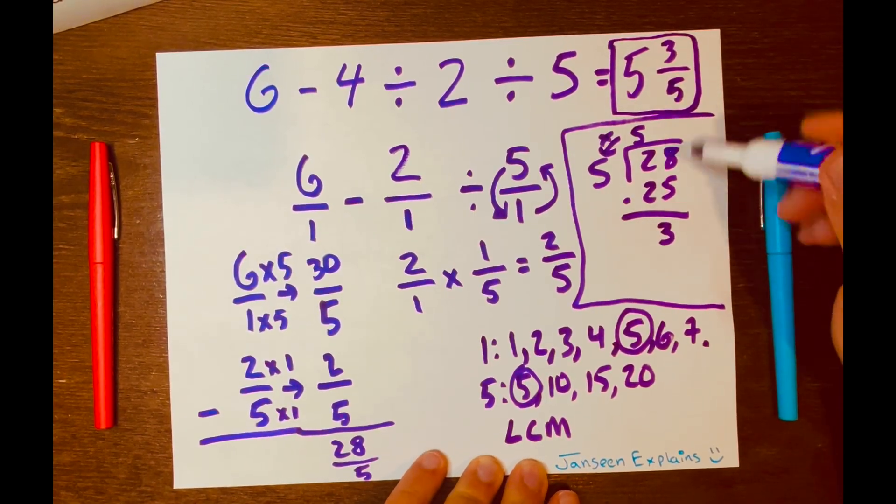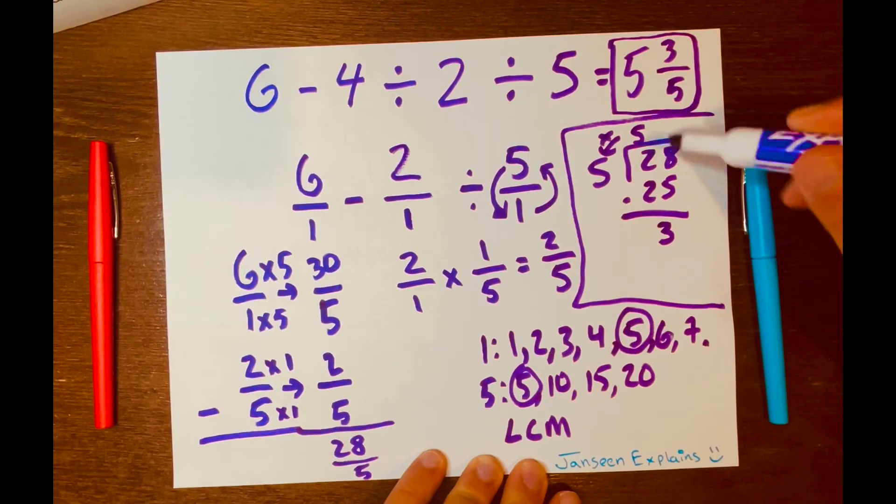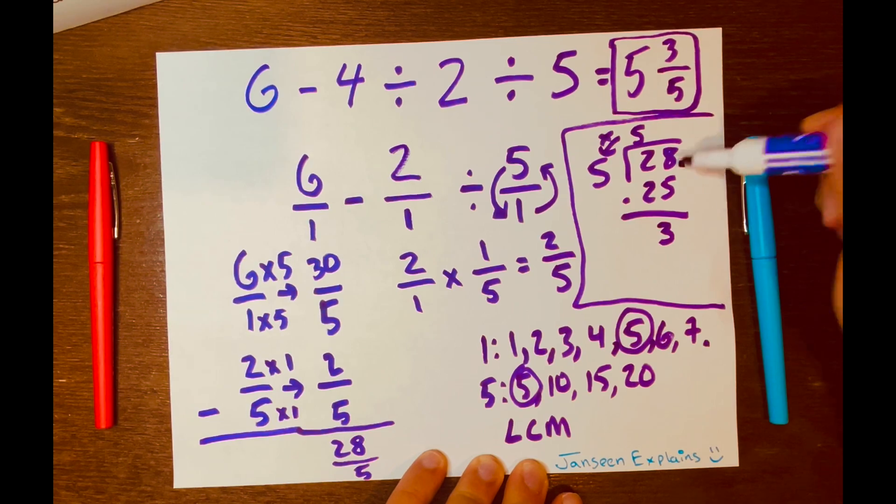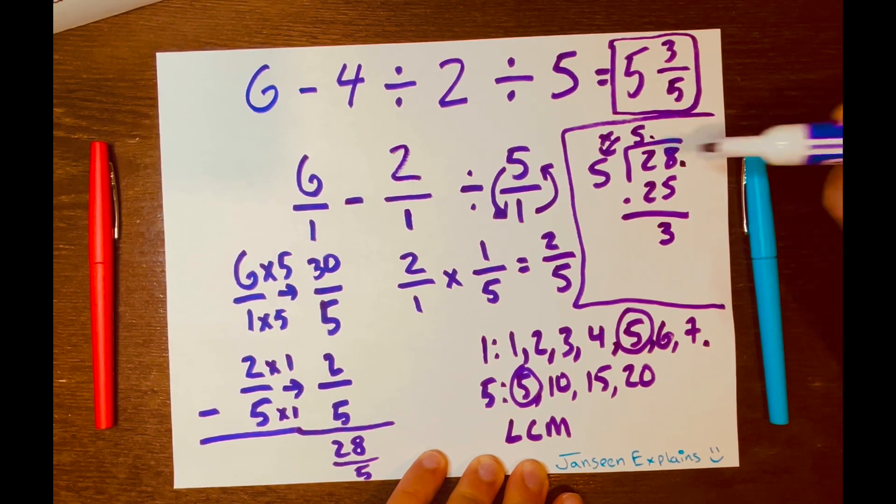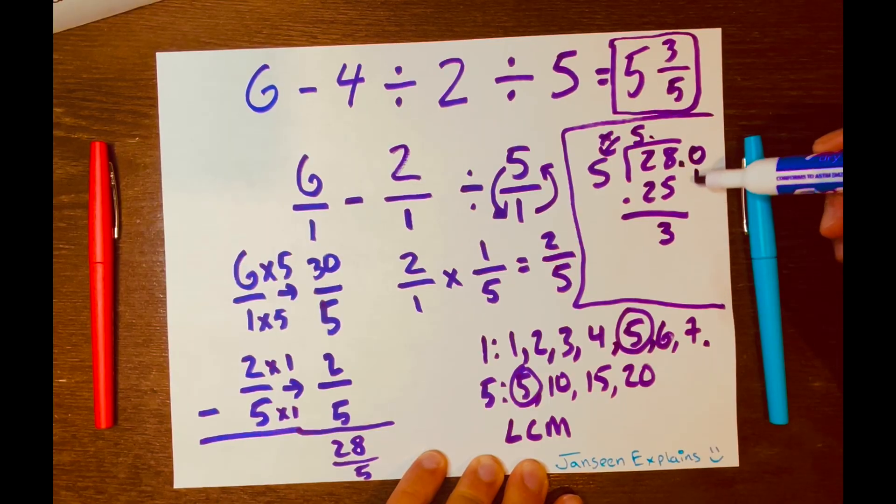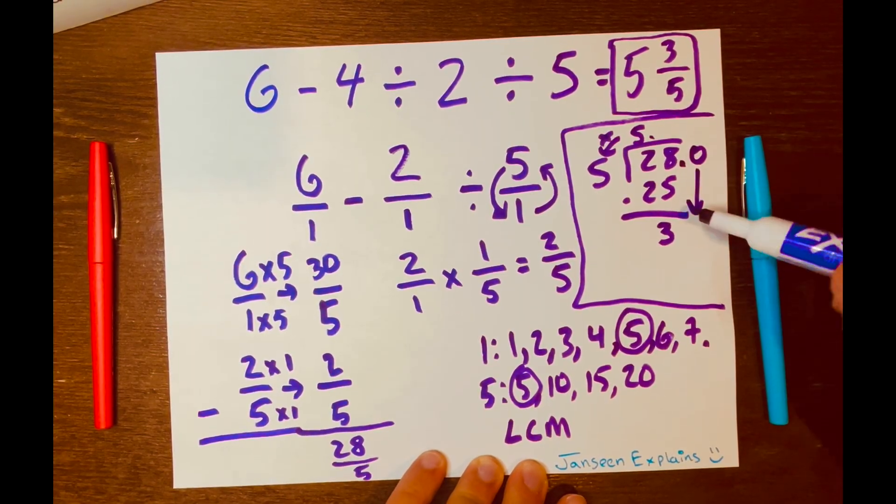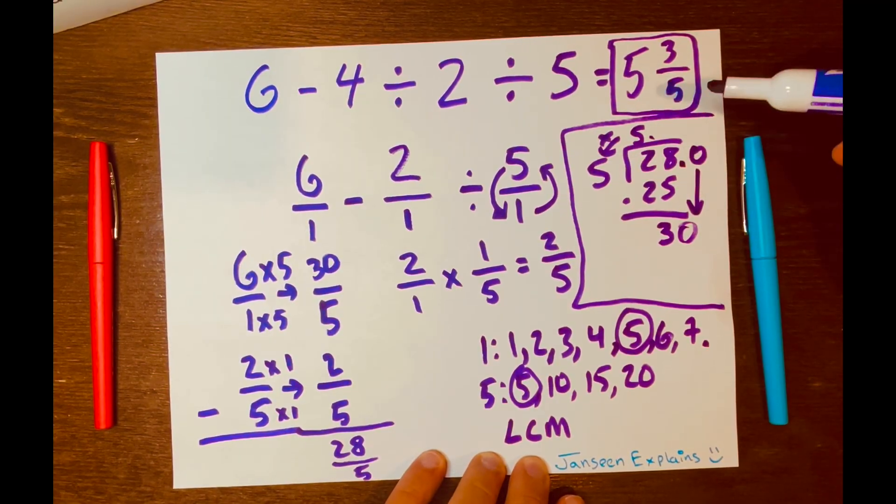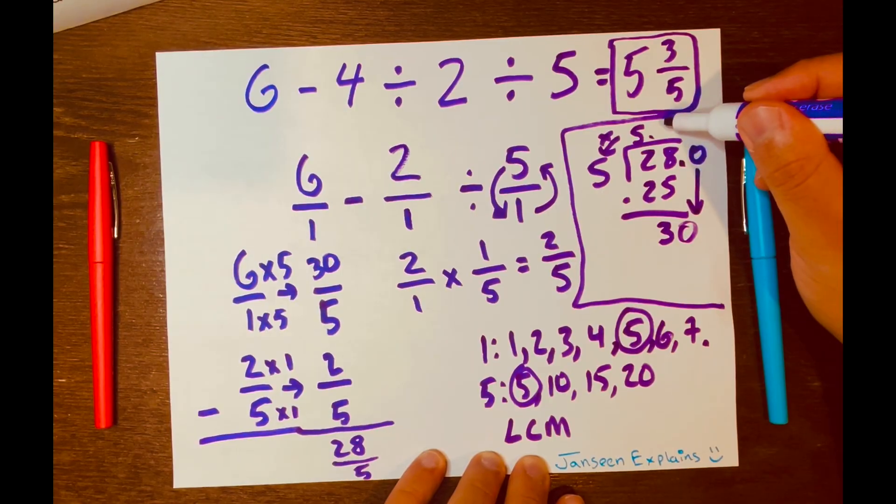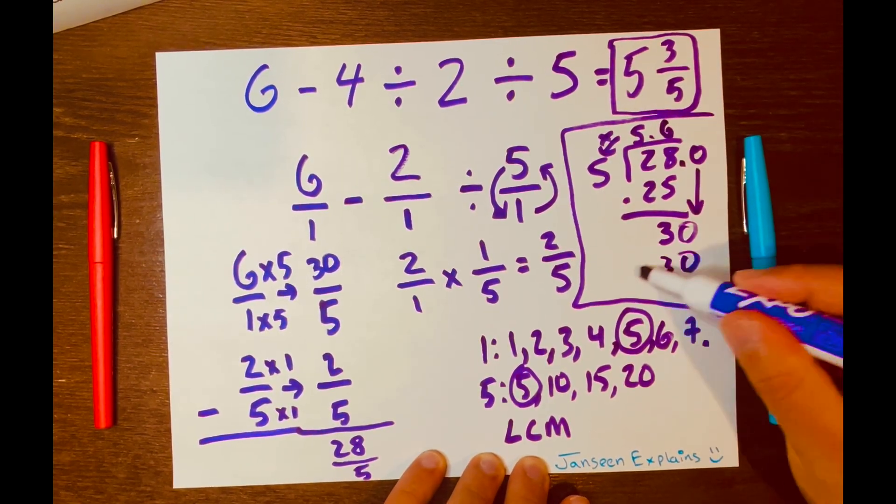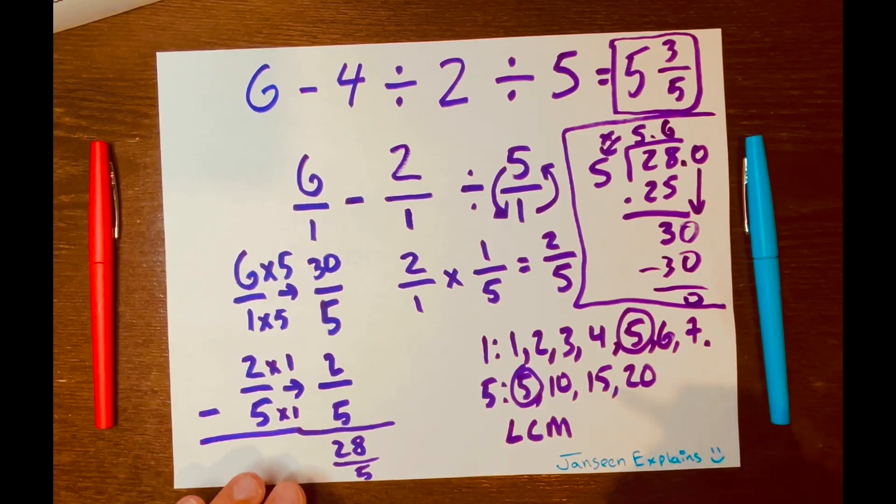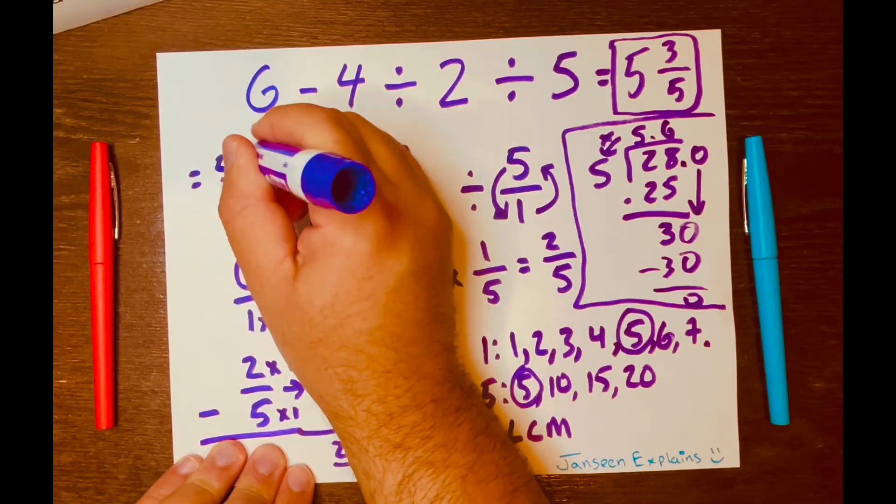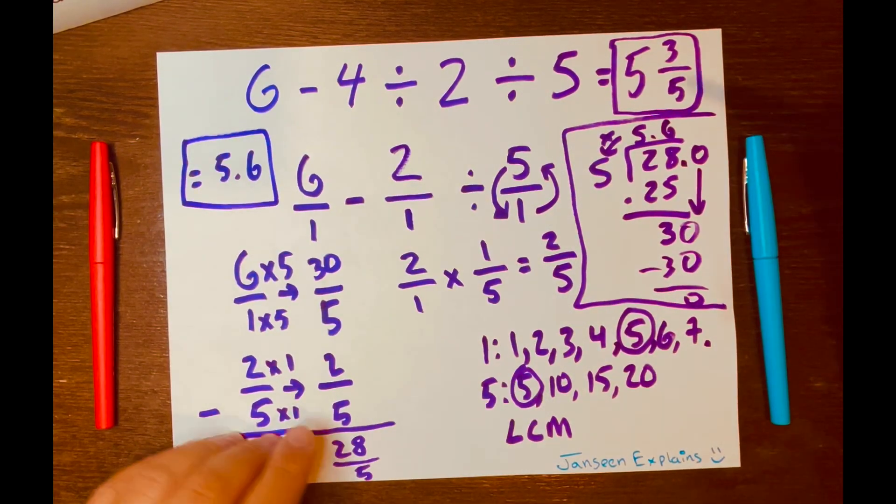And we can continue for a decimal answer. So how many times can 5 fit into 3? You cannot. So we need to borrow. So I'm going to add a decimal after the 28 and the 5. And the 3 needs to borrow 0. So the 0 comes down. So now 3 becomes 30. So how many 5s can fit into 30? Think about it. 6. And 6 × 5 is 30. So your decimal answer is 5.6. And there you go.